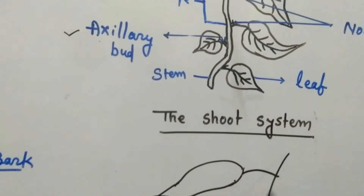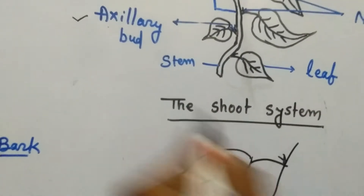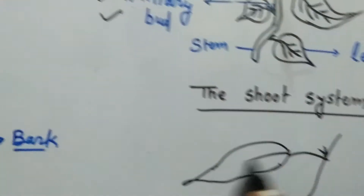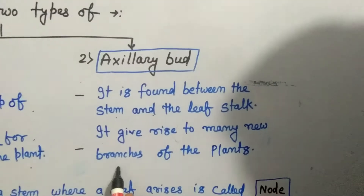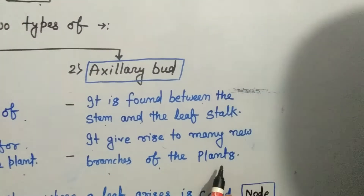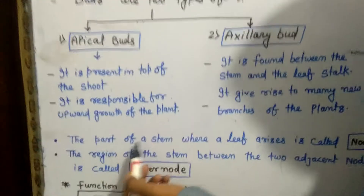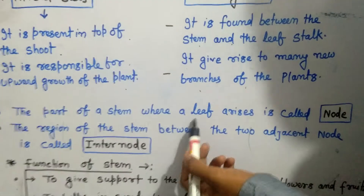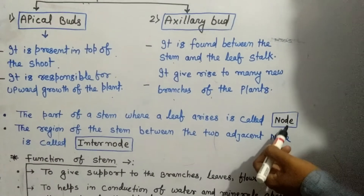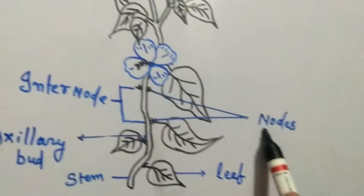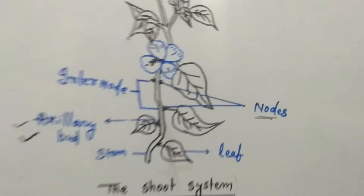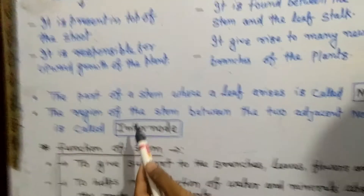The axillary bud gives rise to many new branches of the plant. The part of a stem where a leaf is attached is called a node. Here in the figure, these points are called nodes.